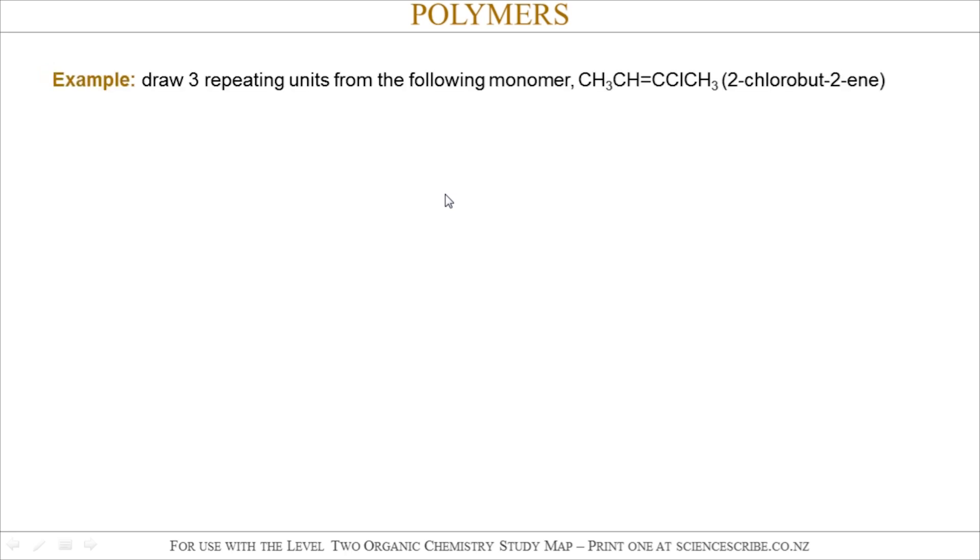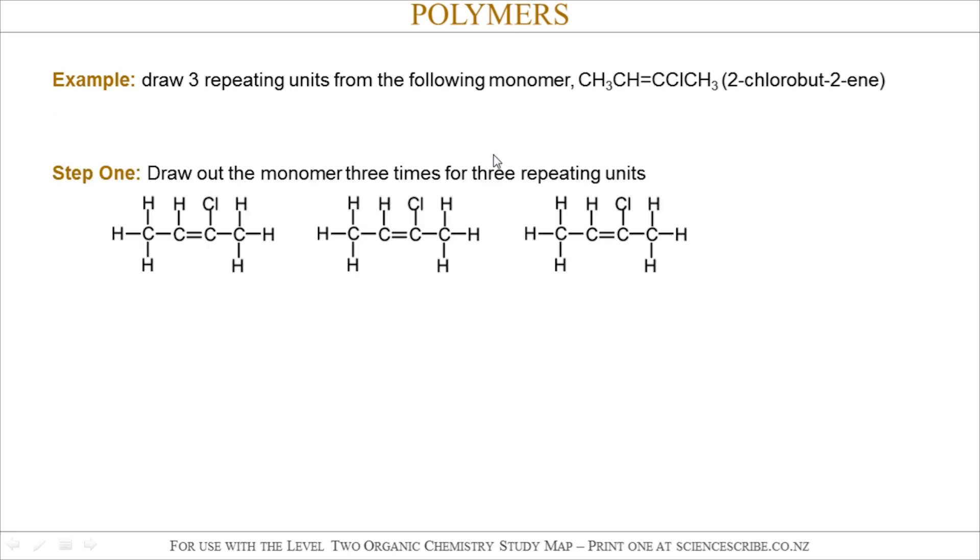An example question might be that they want you to draw three repeating units of a polymer chain which is formed from a particular monomer, say for example 2-chlorobutene. The first thing you need to do is draw 2-chlorobutene out three times. So that's your monomer. We're drawing it out three times because they wanted three repeating units.